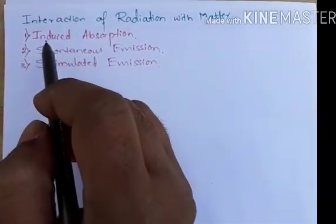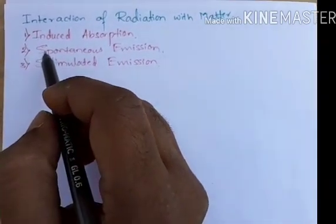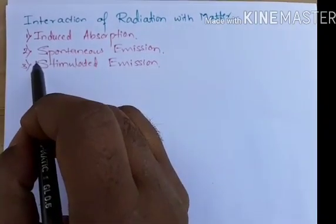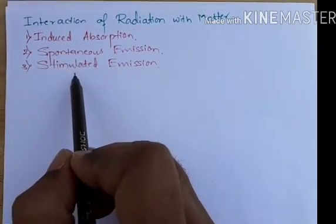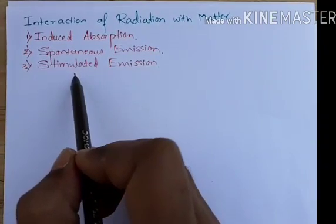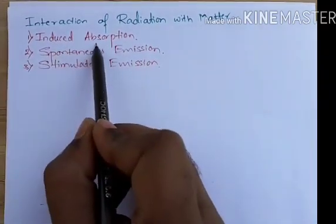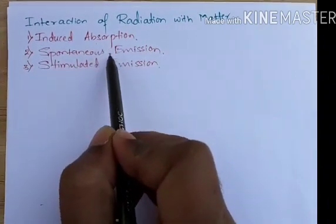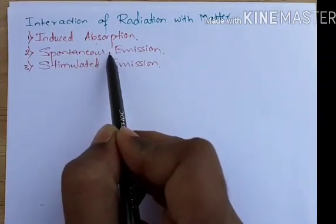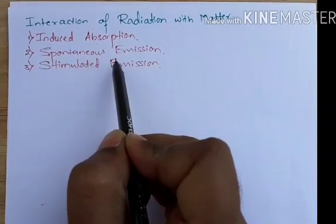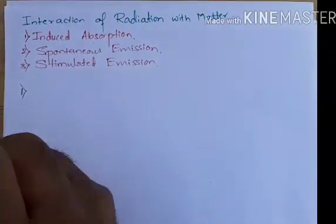Now, the interaction of radiation with matter occurs in three ways. The first is induced absorption, the second is spontaneous emission, and the third is stimulated emission. In induced absorption, light is absorbed by the matter. Then the matter emits radiation in two ways: spontaneous emission and stimulated emission.